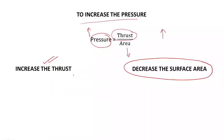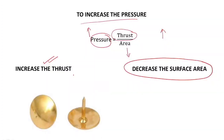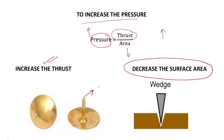An example where surface area is decreased to increase pressure: objects like board pins or simply pins — at the tip of the pins the surface area is very small. When the surface area is less, there is more pressure, and thus it can easily penetrate through any surface. The tip of the pins or tip of the needles has less surface area, so less surface area means more pressure.